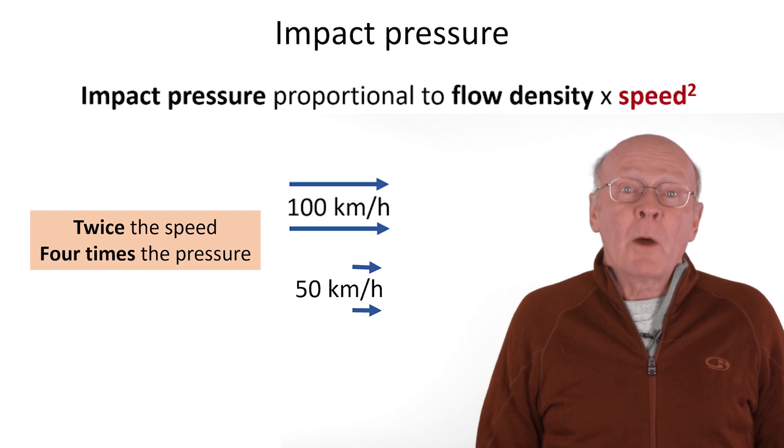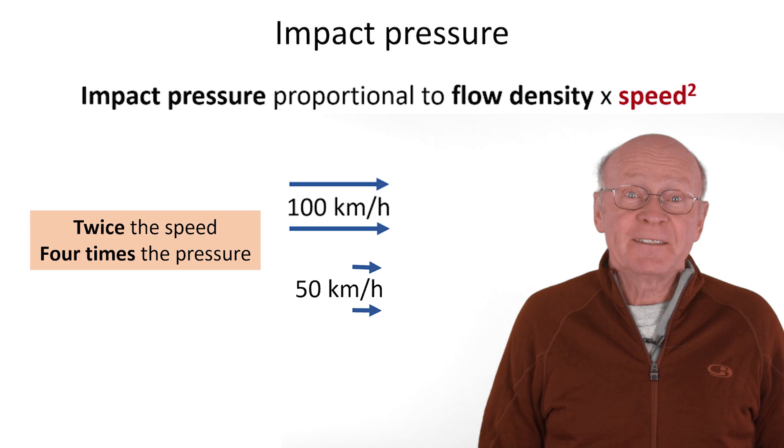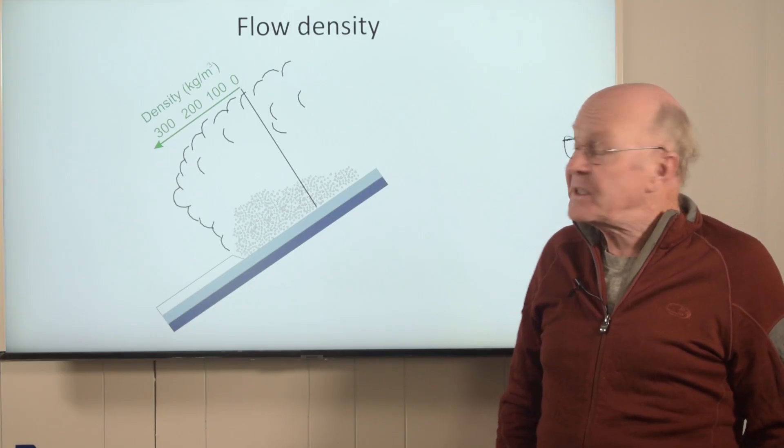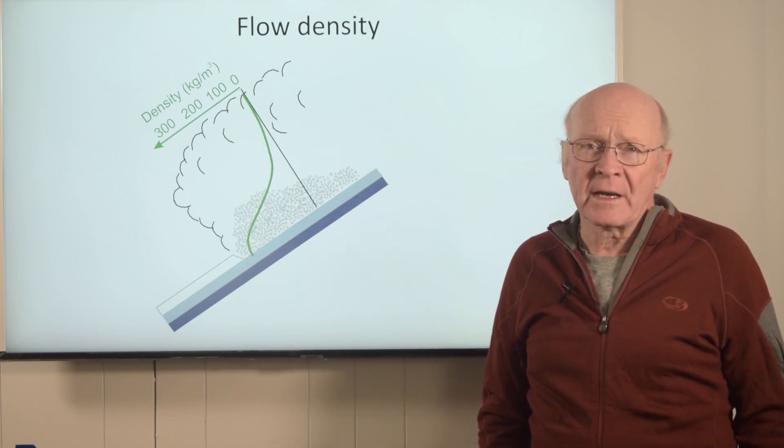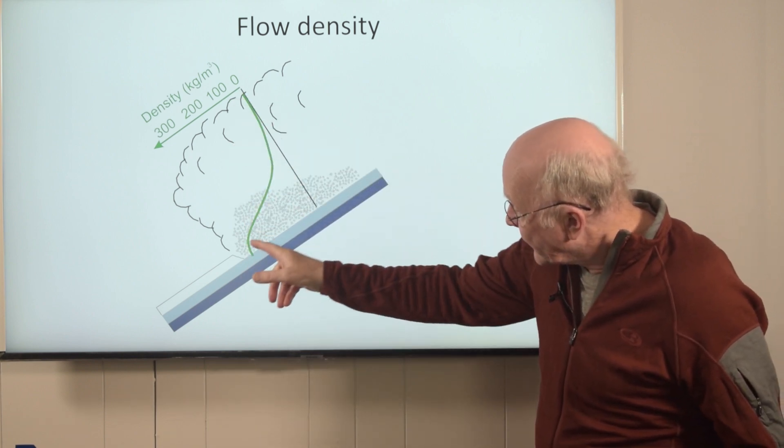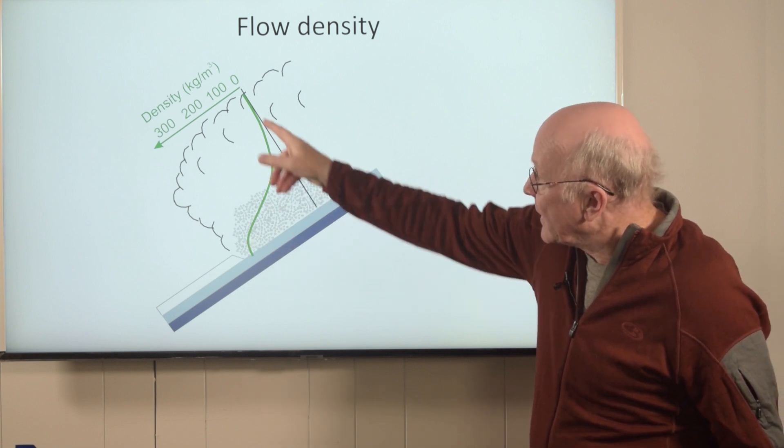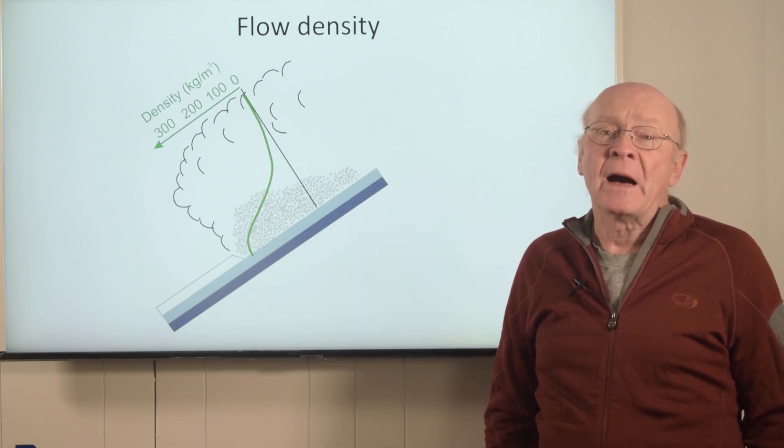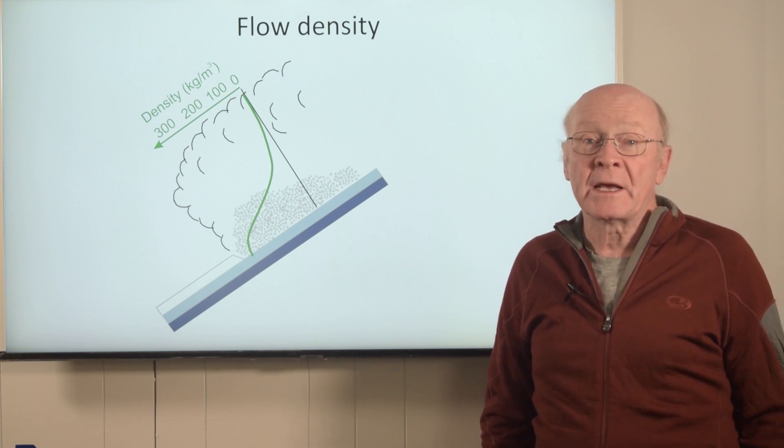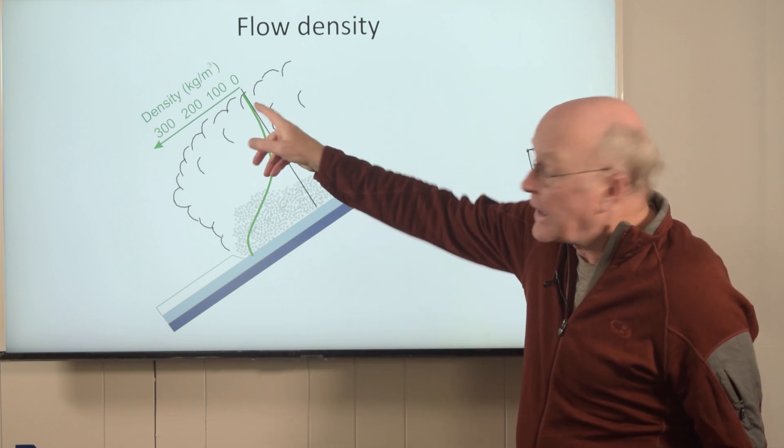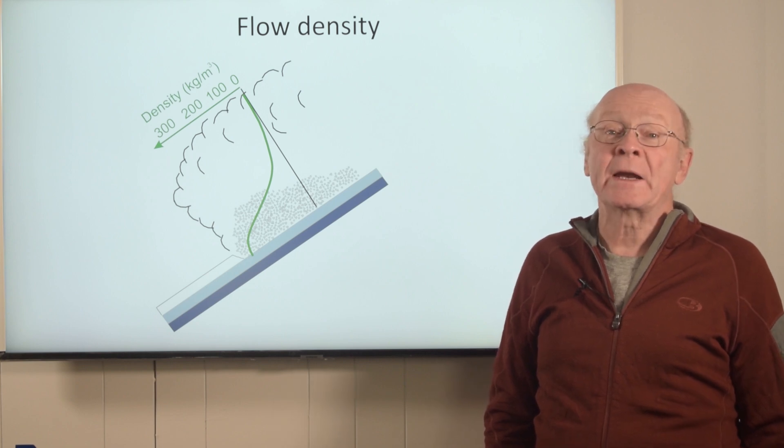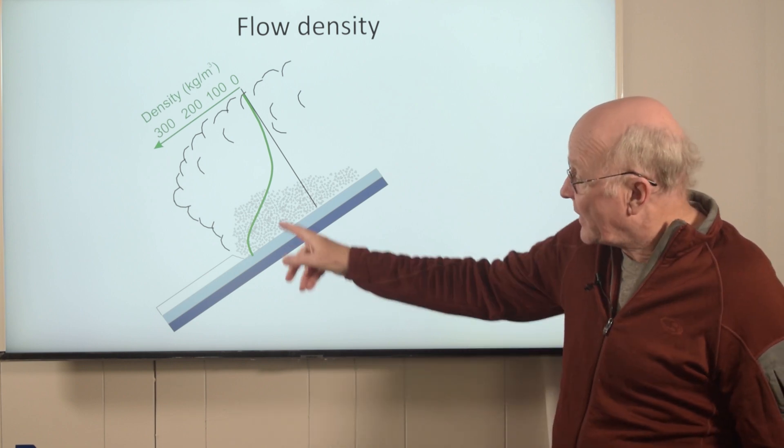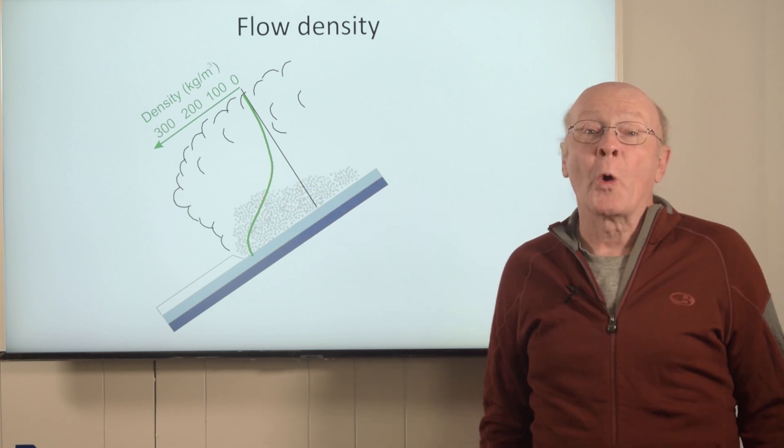For impact pressure, we also need an estimate of flow density. For a large dry avalanche, the density of the flowing snow decreases with height as shown by the green line from up to 300 kilograms per cubic meter in the dense core to a few kilograms per cubic meter high in the powder layer. Since air has a density around 1.3 kilograms per cubic meter, the flow high in the powder layer is only a few times denser than air. Sometimes the impact pressure is calculated for these two layers, the dense flowing layer and the powder or suspension layer.